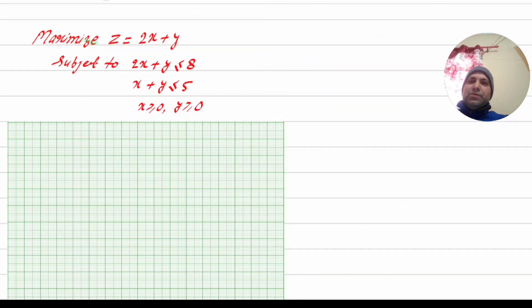Dear students, the linear programming problem graphic method is complete in this video. In the simplex method, we will discuss the link about the simplex method. Linear programming problems are of two types: maximizing problem and minimizing problem.